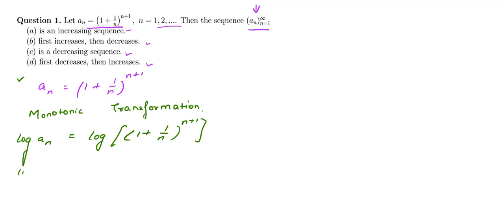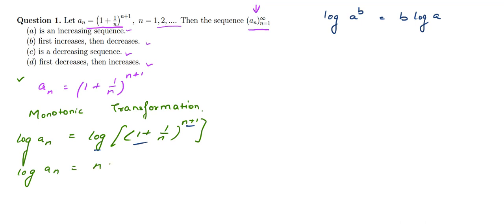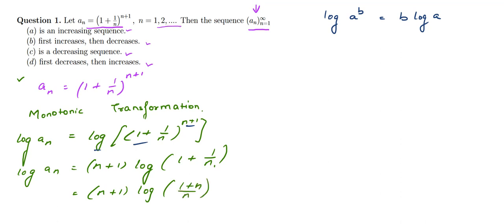On the right-hand side we have the form log(a^b), which can be written as b·log(a). So this becomes (n + 1)·log(1 + 1/n). Taking the LCM inside the log gives us (n + 1)·log((n + 1)/n). Applying the rule log(a/b) = log(a) − log(b), we get log(a_n) = (n + 1)·[log(1 + n) − log(n)].